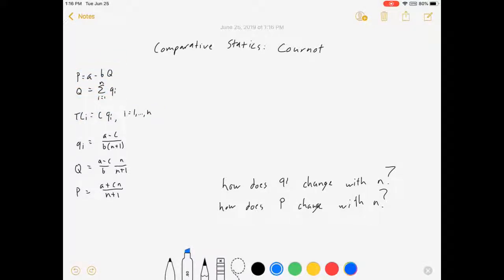Based on these assumptions, here's what the individual firm makes. Here's the market Q, and here's the market P.